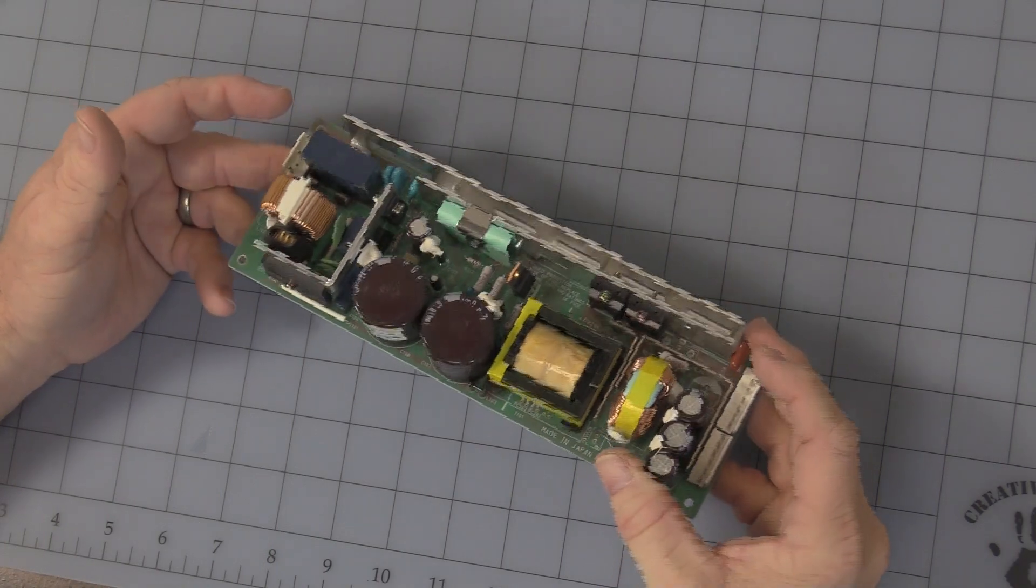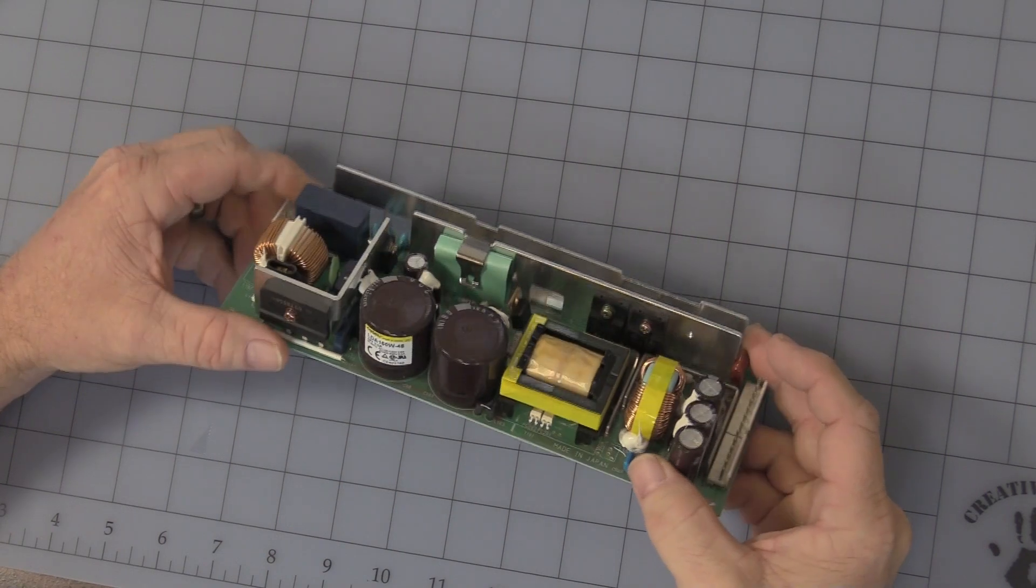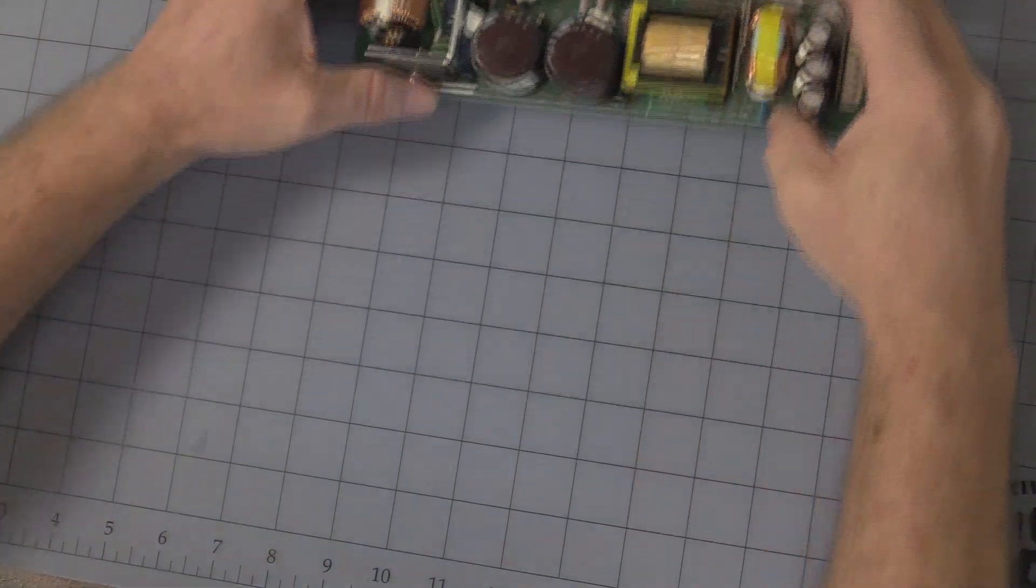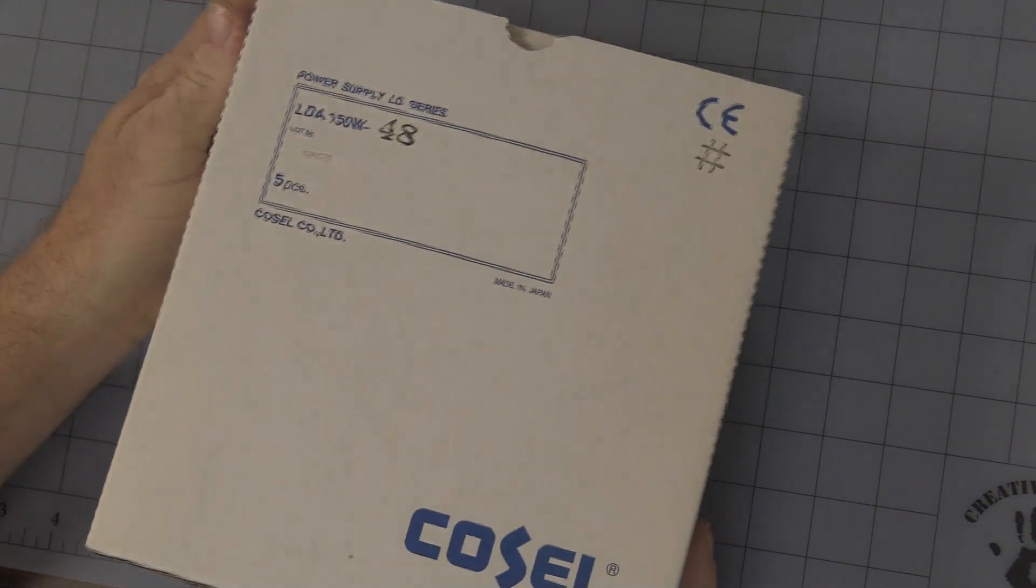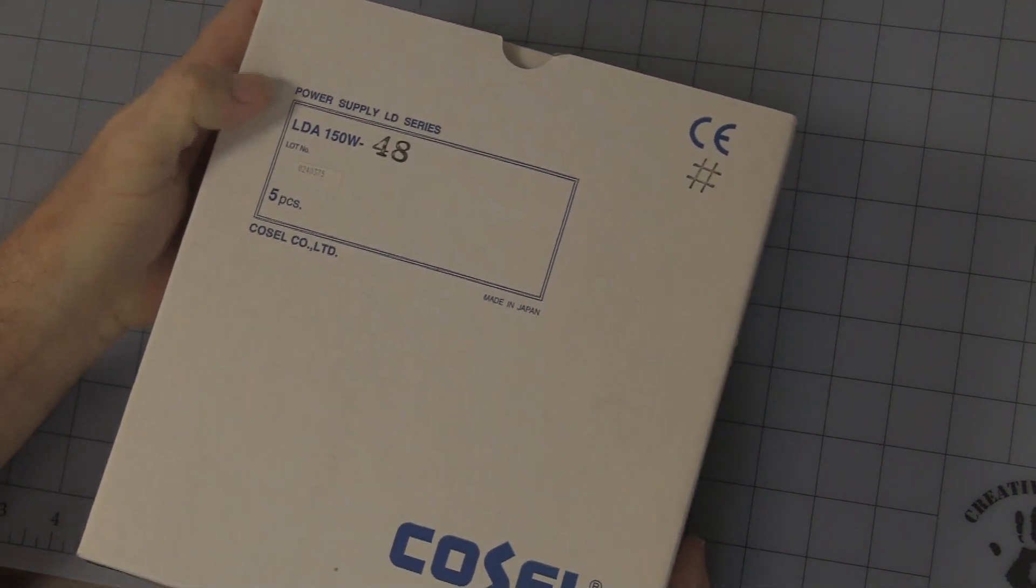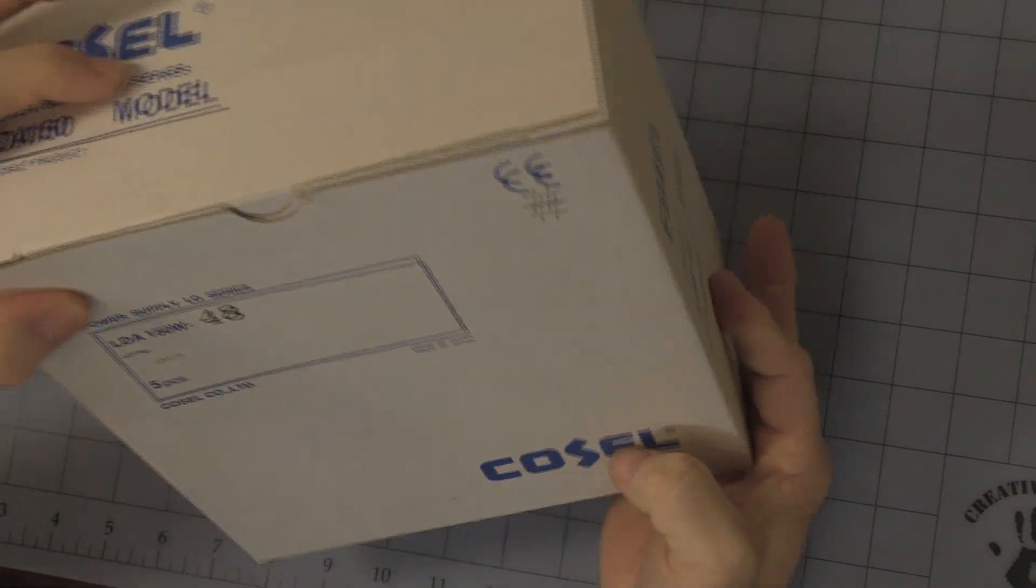If you were to buy one or two of them from us they will come just like this wrapped in a little bubble wrap. But if you order five or more they do come in these factory cases of five pieces. There is a lot number which probably has the date code that I have not been able to decipher.